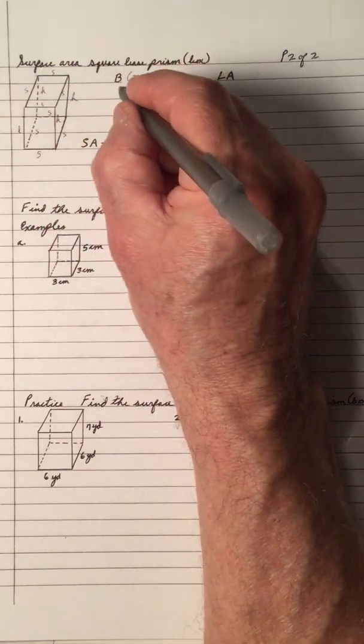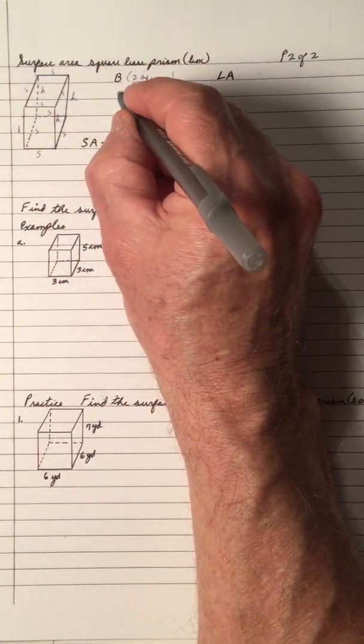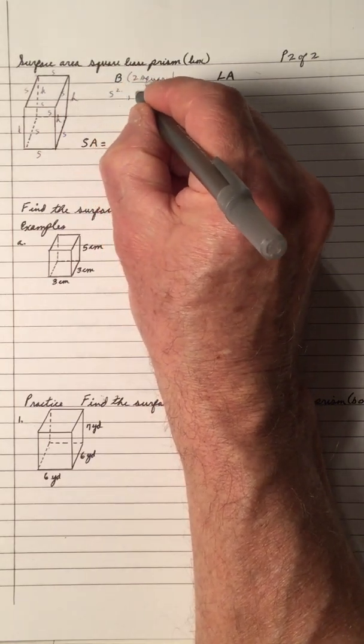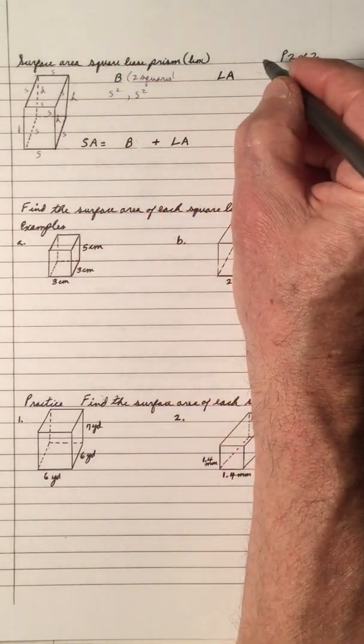So that means that one of them is S squared, and the other one is S squared to get their areas.